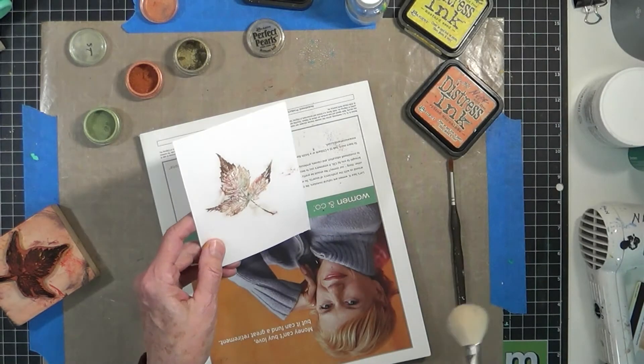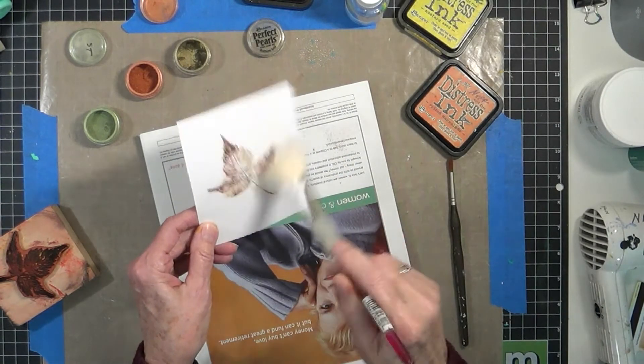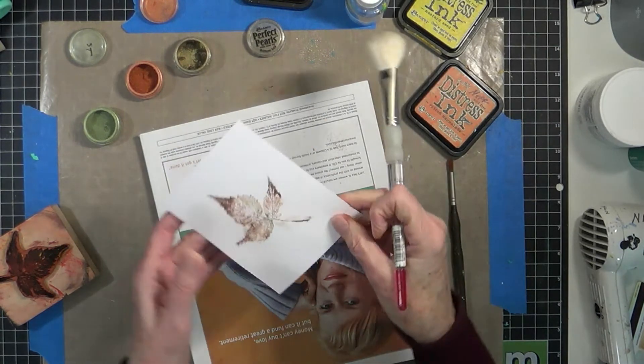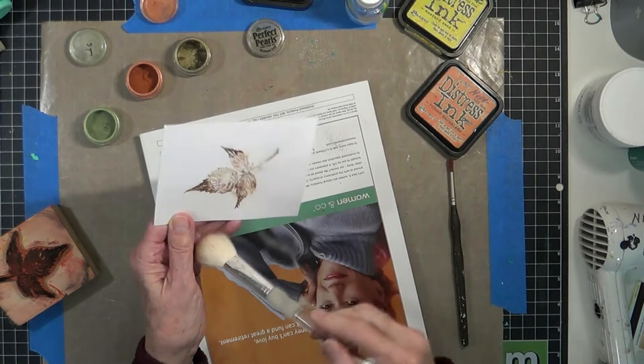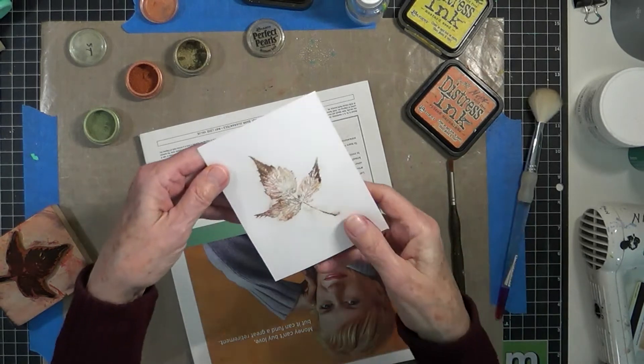And then I have these, I don't know, they're makeup brushes, I think. But they work really good for brushing away excess Perfect Pearls and glitter. And there you have it.